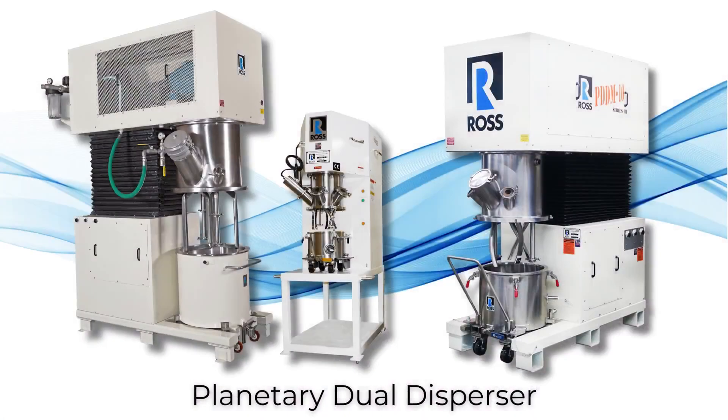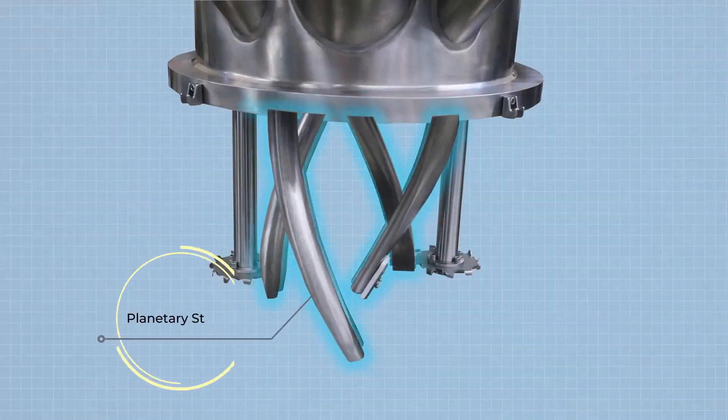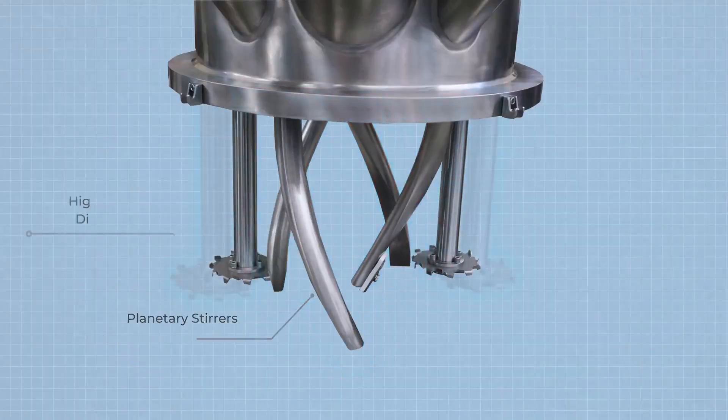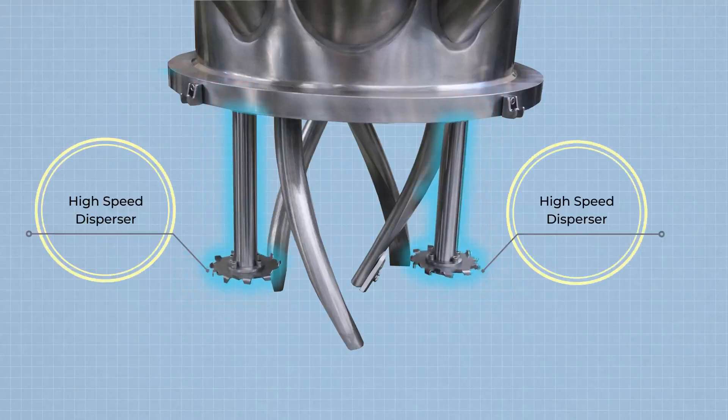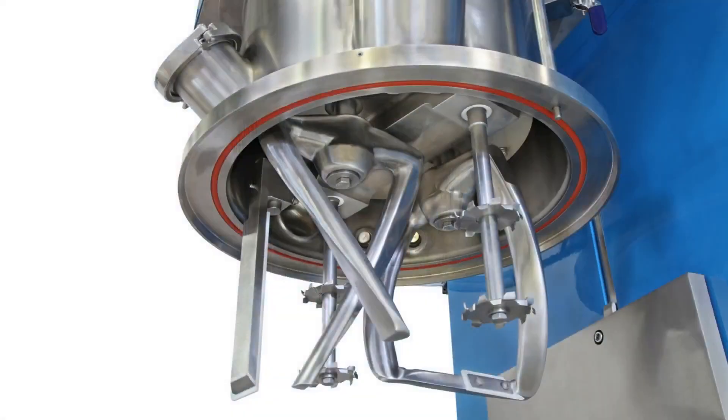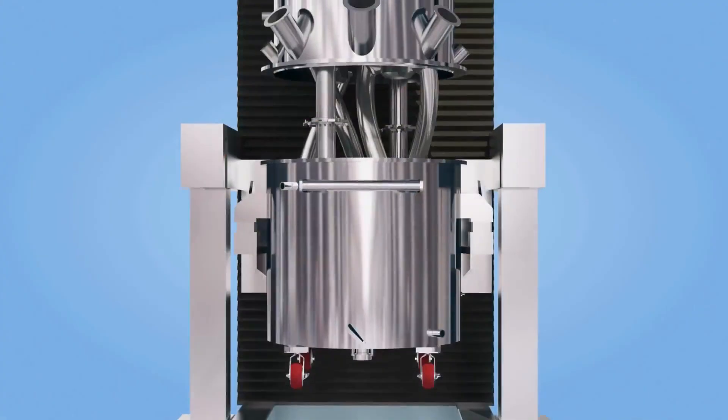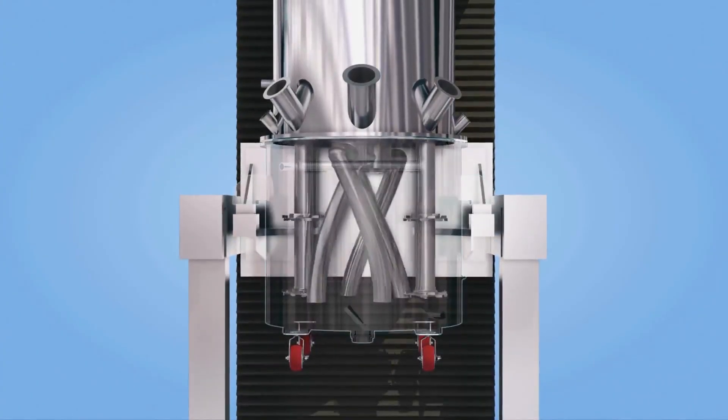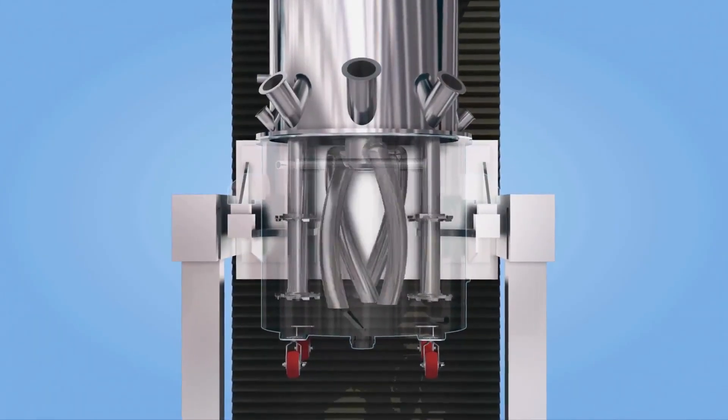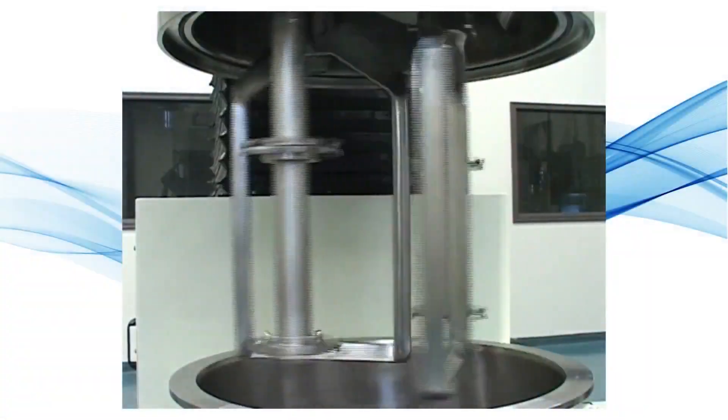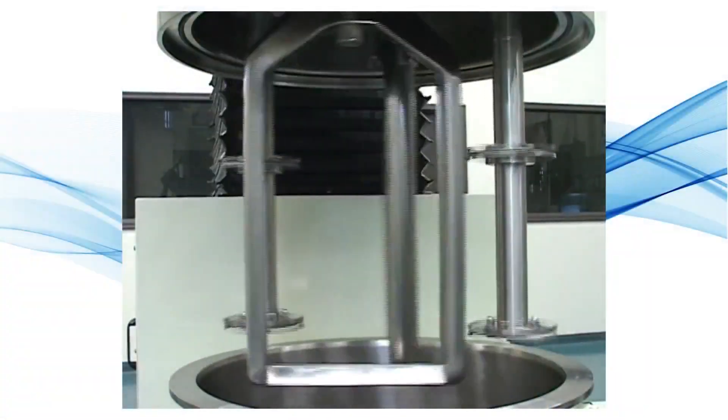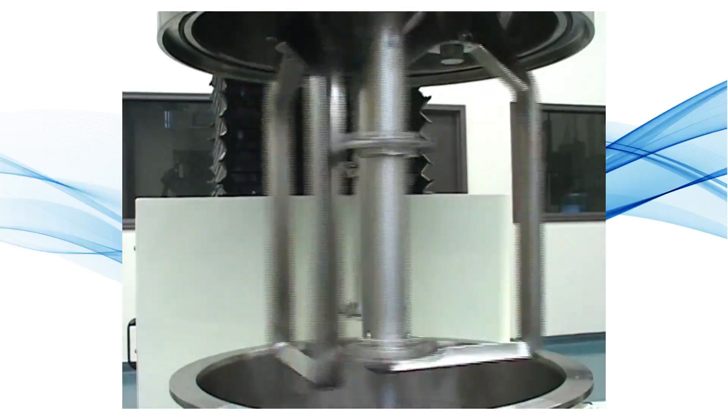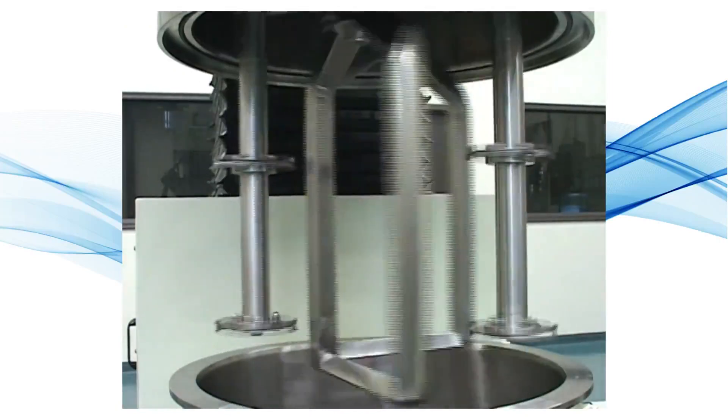The Ross planetary dual disperser is a robust system where two planetary stirrers and two dispersers rotate on their own axes while revolving around a central axis. The planetary stirrers continuously sweep material near the vessel walls and bottom, carrying them toward the sawtooth blades. Agglomerates are disintegrated faster and turnover is extremely efficient, even if the material is particularly dense or sticky.